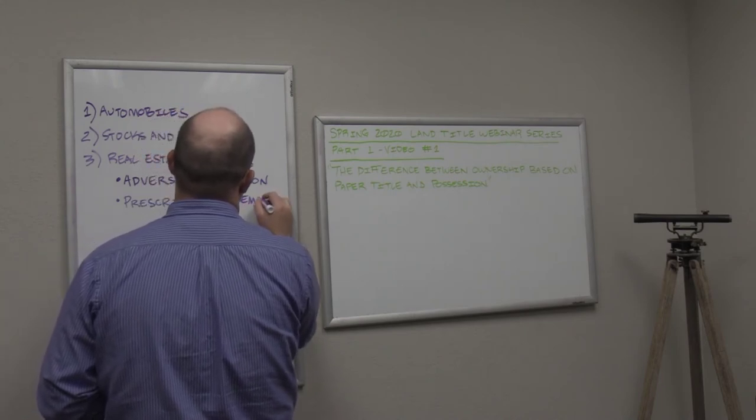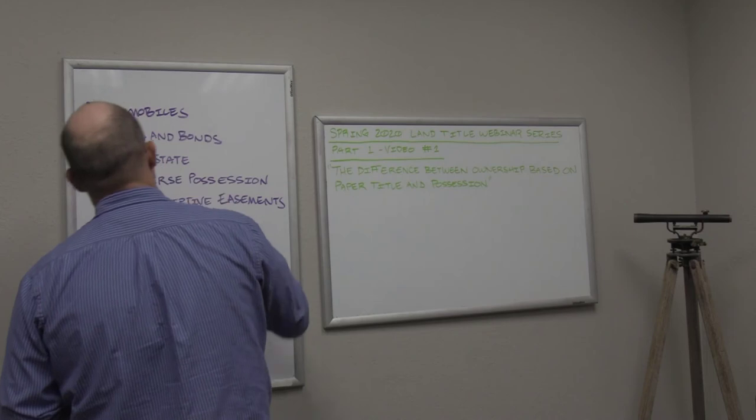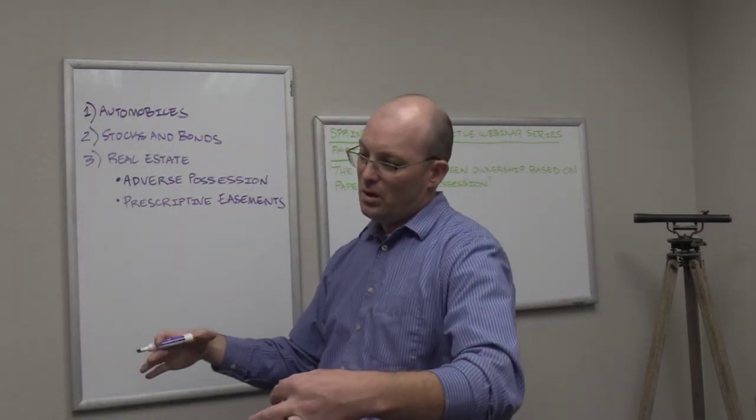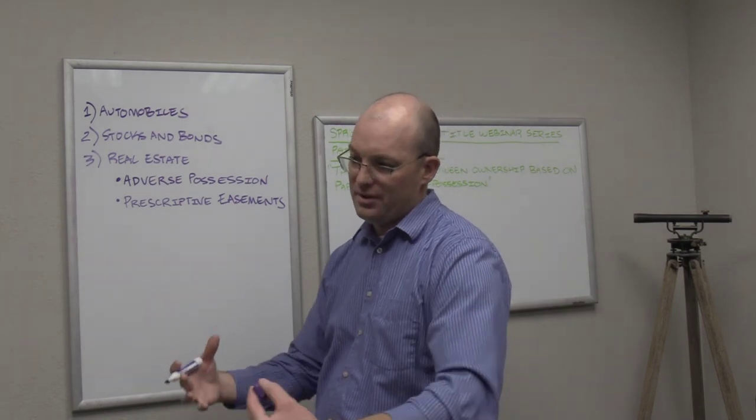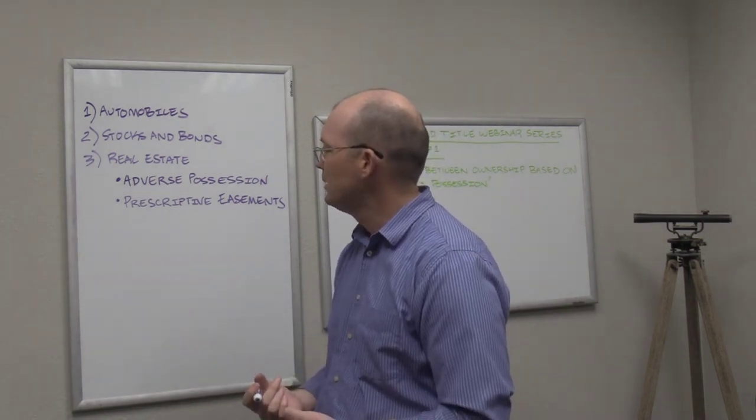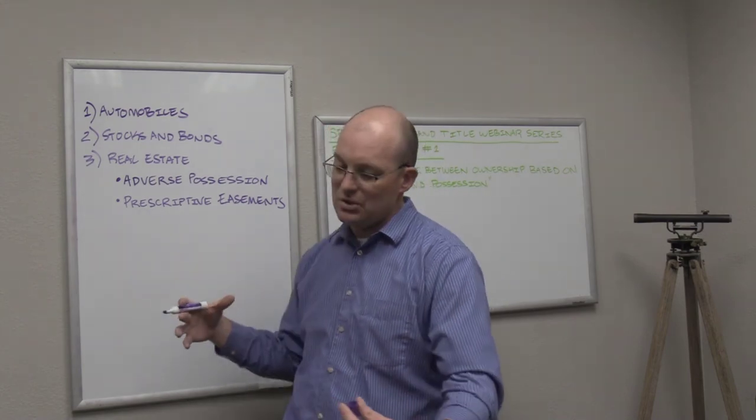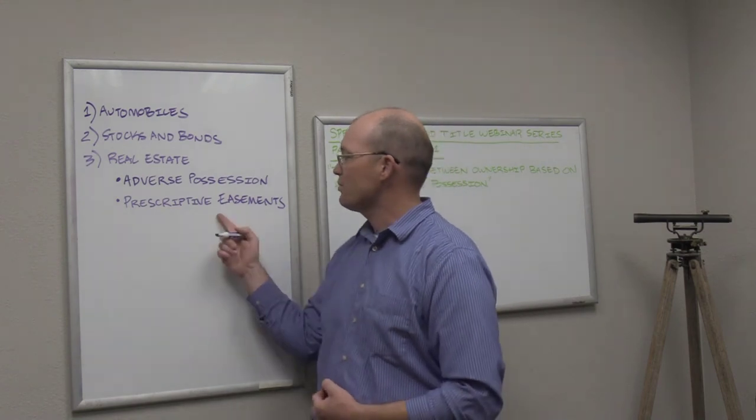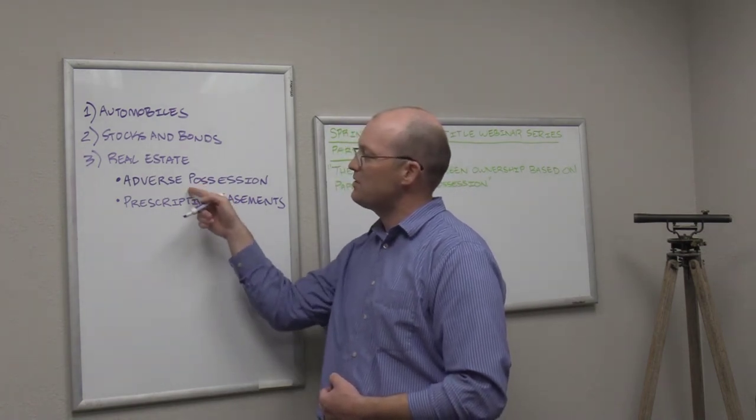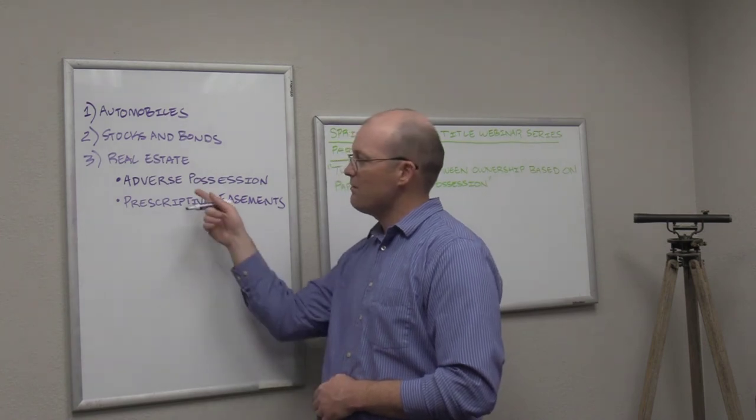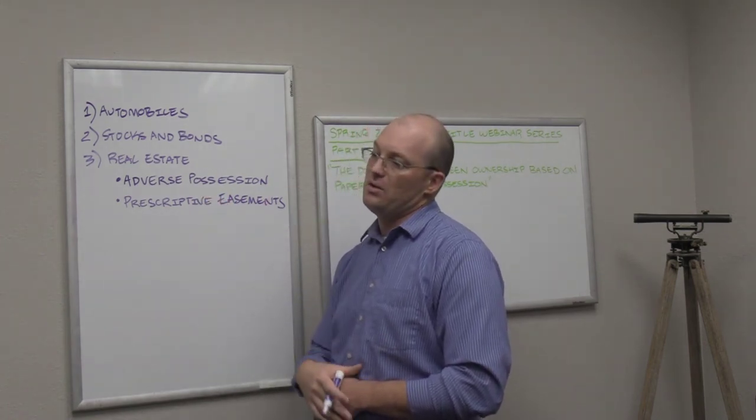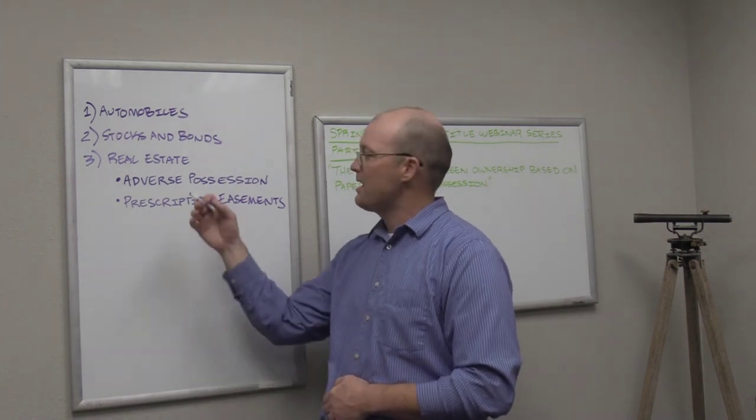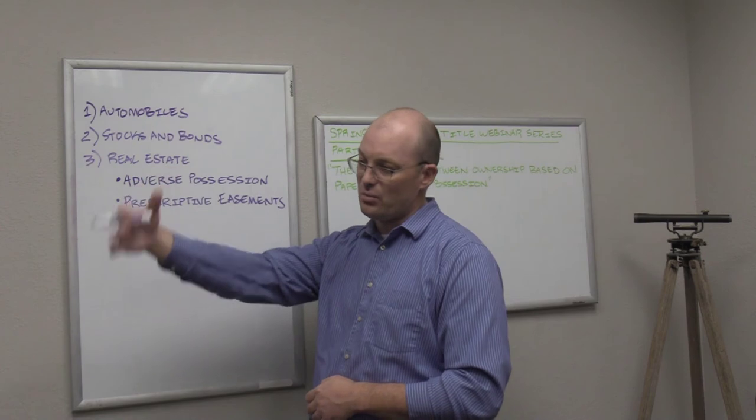Adverse possession is also known as squatter's rights. That's when you acquire the actual underlying ownership of the dirt, the fee ownership, what we call fee simple absolute. A prescriptive easement is when you don't get the actual ownership but you acquire a right to use somebody's land. Those are prescriptive easements. There's different legal requirements that you have to meet for these. One of them is the length of possession. The use has to be open, it has to be notorious, it has to be hostile. In most places in the United States, you have to pay taxes to get adverse possession. There's a whole set of rules.